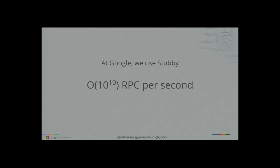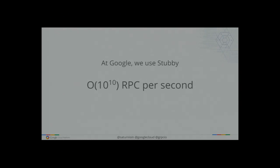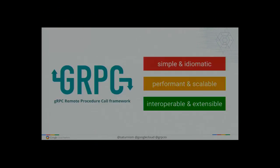And that is where gRPC comes from. At Google, we actually use an internal framework called Stubby — our internal RPC framework — used for just about everything for remote procedural calls. We handle about 10 to the 10th RPC calls per second with Stubby. It was made to be very, very efficient. Just imagine if we need to make that 10 to the 10th number of calls with REST. If it just takes one byte bigger in the message size than necessary, we're looking at 10 to the 10th more bytes that we have to transfer across the wire, across the data centers.